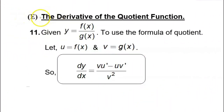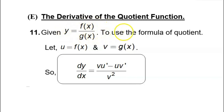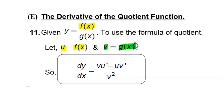In this lesson, we are going to discuss the derivative of the quotient function, given y equals f(x) over g(x). Notice that y is in the form of a quotient. To use the quotient rule formula, let u equal f(x), where f(x) is the function at the numerator, and let v equal g(x), where g(x) is the function at the denominator.